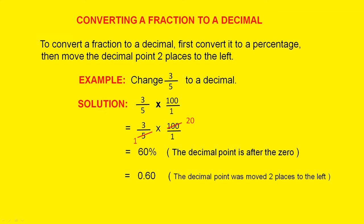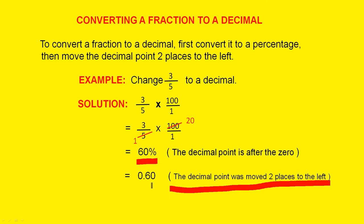Example: change 3 over 5 to a decimal. We first multiply 3 over 5 by 100 over 1. After doing the working, as in the previous slide: 5 into 5 goes once, 5 into 100 goes 20, and 3 times 20 gives you 60%. Now the decimal point is after the zero, so we move it two places to the left — one, two — and the answer is 0.60.